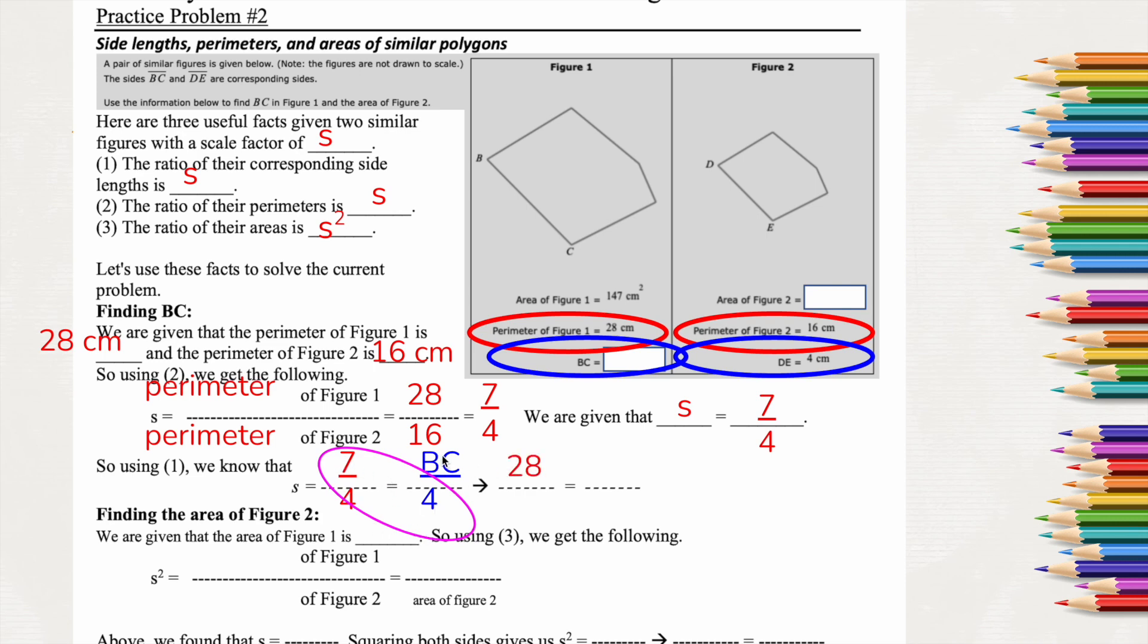Now I can cross multiply. So 7 times 4 is 28, and BC times 4, that's just 4BC because I just multiplied them together. So now to find out what BC is, I'm going to divide by 4 on both sides because 28 divided by 4 is 7. Now I can also see if it's 7 over 4, and this is already 4, this has no choice but to be 7 because it has to match that ratio of 7 to 4. So that was another thing. If you had noticed that ahead of time, awesome.